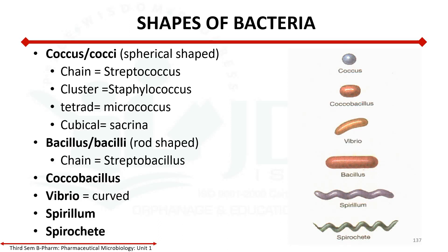Vibrio is a comma shape — this is the vibrio form. Then there is spirillum, which has a spiral-like structure, and spirochetes, which also have a spiral-like form.